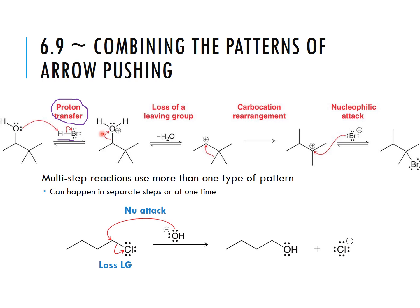As a result we end up with a carbocation. The negative H2O here tells us that water was our leaving group — it's indicating that we've lost water because of this reaction. Now we have a carbocation, so in this step we have to look for carbocation rearrangements.